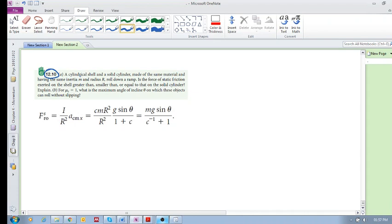So we've got a cylindrical shell and a solid cylinder made of the same material and having the same inertia M and radius R rolled down a ramp. There's our object. It's either a thin-walled cylinder, a cylindrical shell, or a solid cylinder.